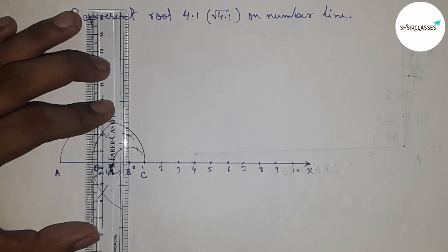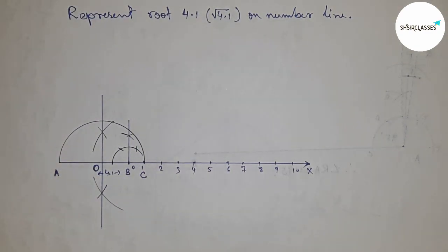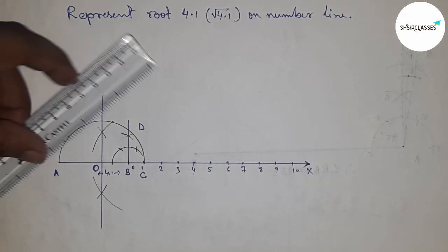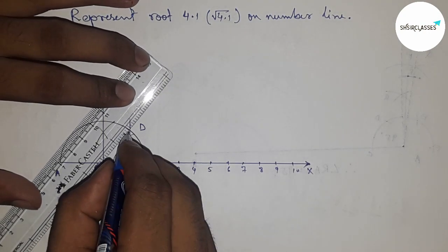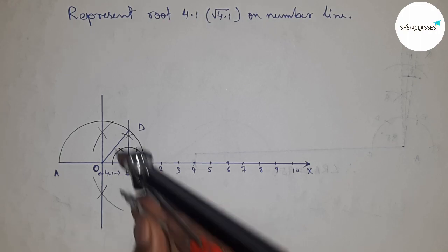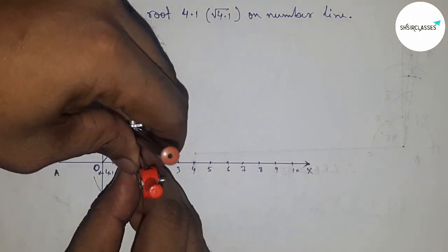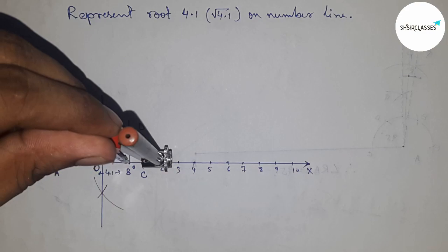Join these lines, which meet at point D. Next, join O and D. Now take the length BD with a compass and draw an arc that cuts the number line at a point.